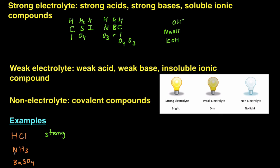The next one is NH3. NH3 is one of your most common weak bases. So as a result, since it's a weak base, it's going to be a weak electrolyte.